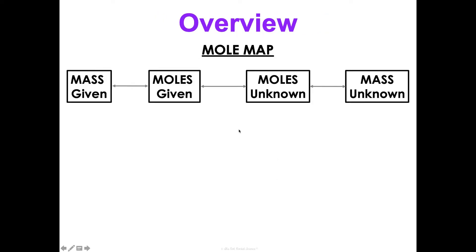When we're doing stoichiometry, there are basically four types of problems you will do, and I've created something called a mole map to help you figure out how to do that. It depends on whether you're given the mass or you're given the moles and whether you're asked to find the moles or find the mass. It'll tell you what your path is. If you are given the mass and you want to know the mass of an unknown, you're going to have to walk all through this process.